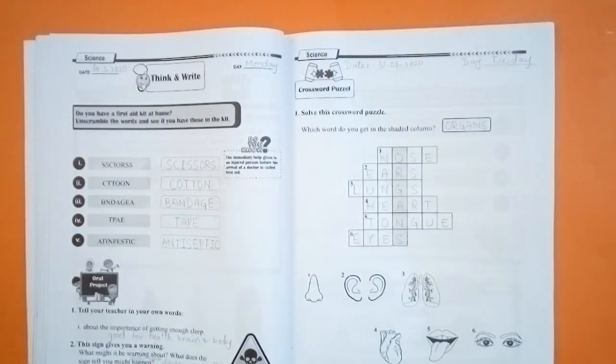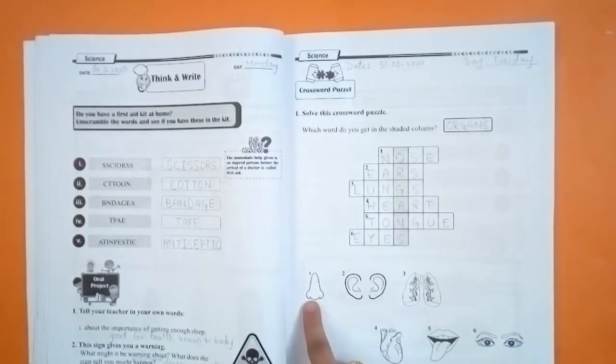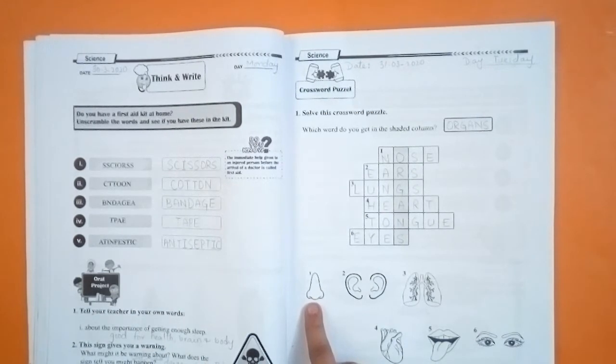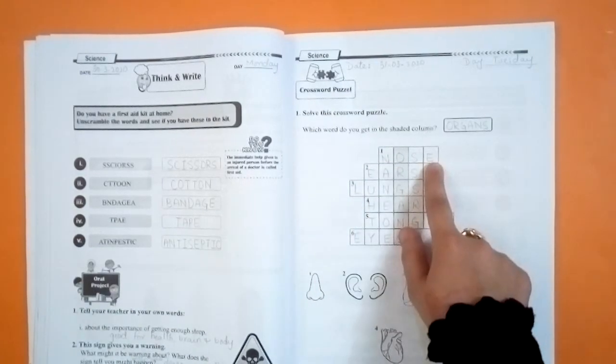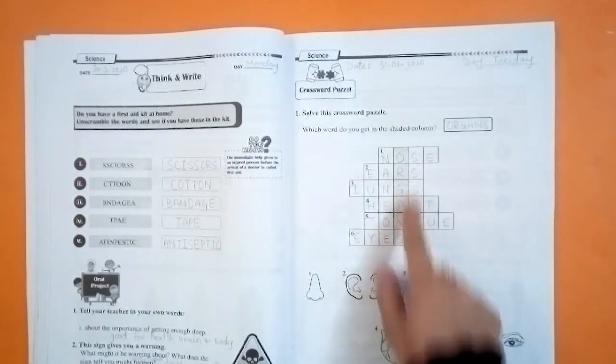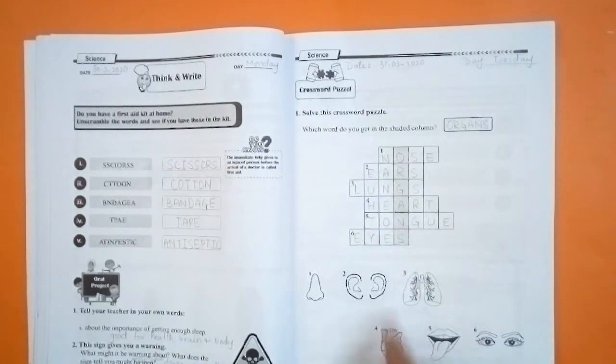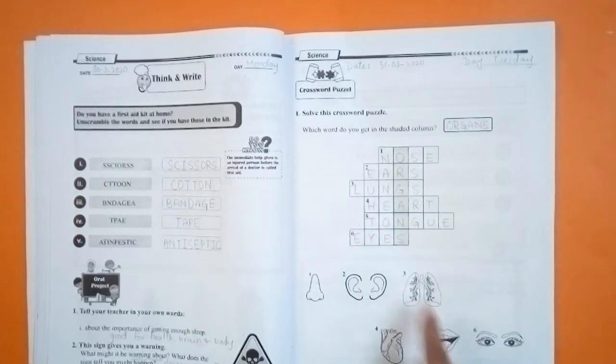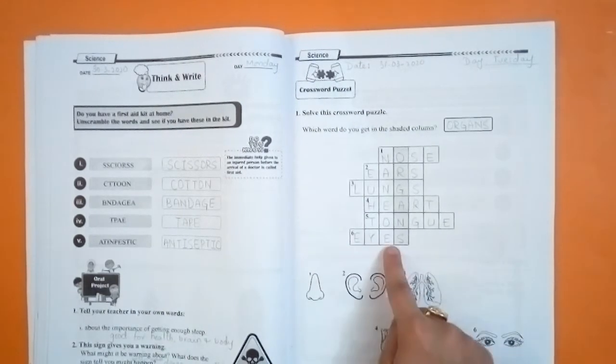The first one is nose. N-O-S-E. In the second section, you have ears. Ears is E-A-R-S. The next one is lungs. L-U-N-G-S. Fourth one is heart. H-E-A-R-T. Fifth one is tongue. T-O-N-G-U-E. Last one is eyes. E-Y-E-S.